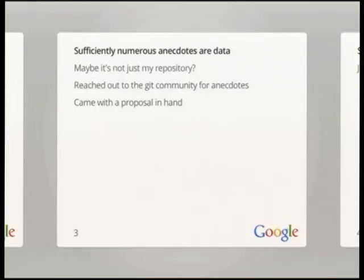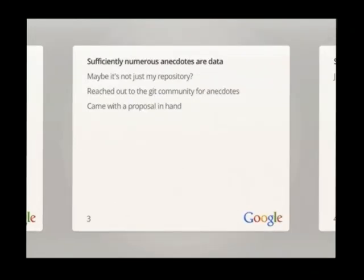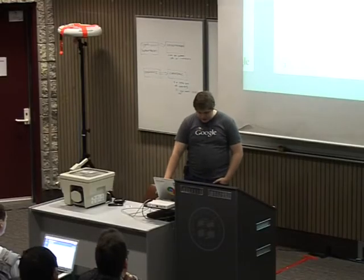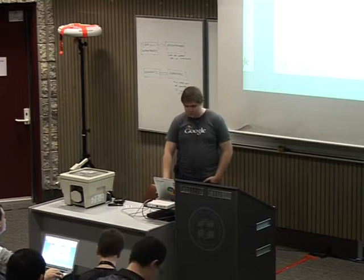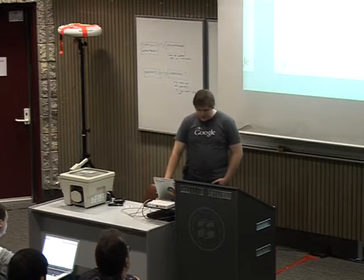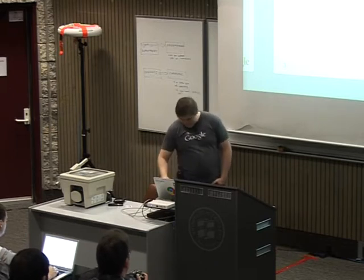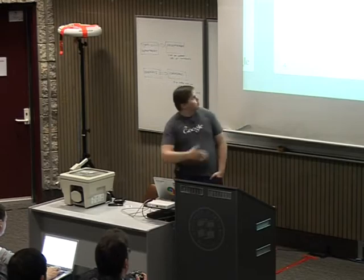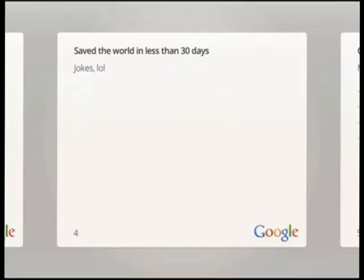Before getting too heavily invested in a solution, I thought it might be a good thing to see if it was just me or if other people out there had the same problems and if they'd actually found any solutions. I reached out to the Git mailing list, because I figured if anyone's going to try converting subversion projects to Git, it's people who use it. I came with a proposal in hand, a prototype, and some stats. It was quite well received — there were a handful of people with anecdotes of repos that would not convert with existing tools, and the numbers got people excited.